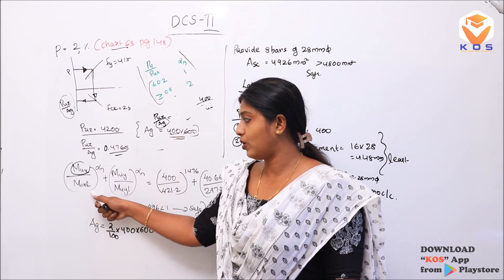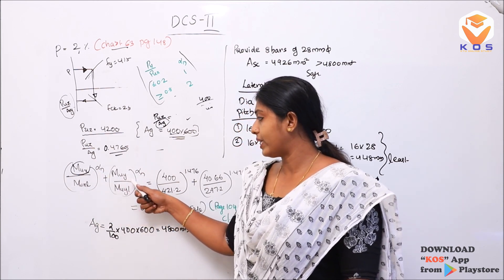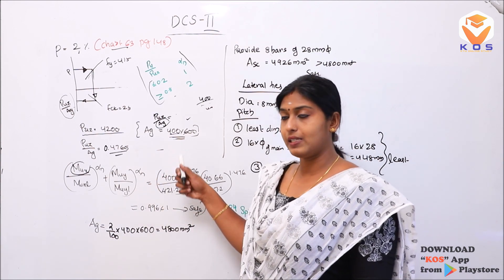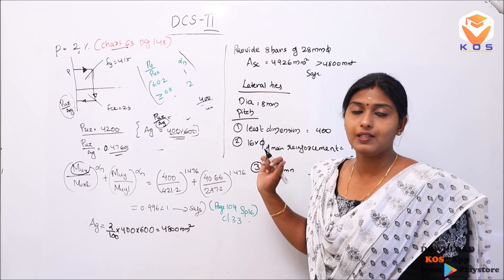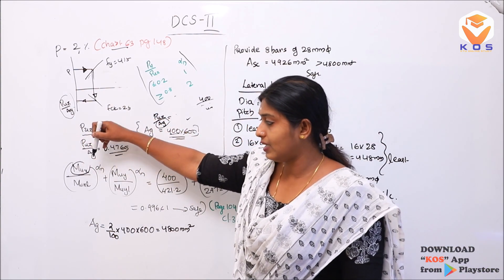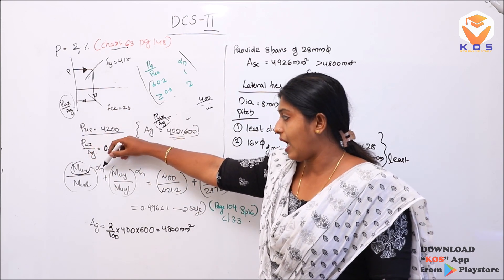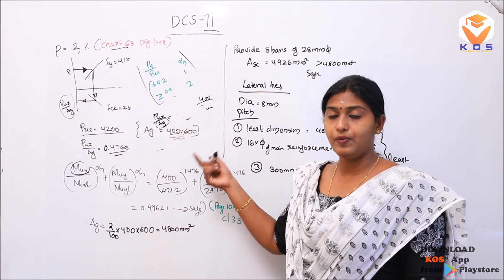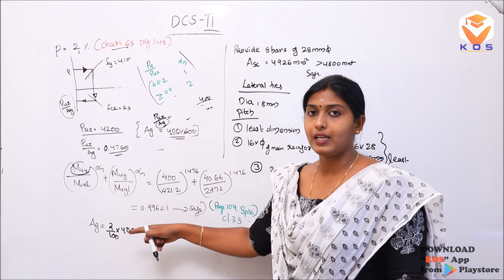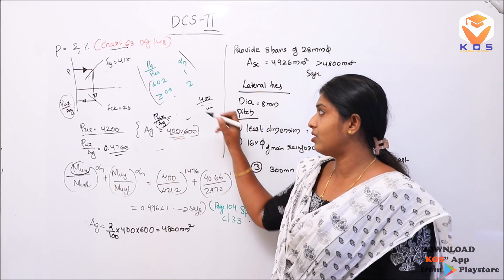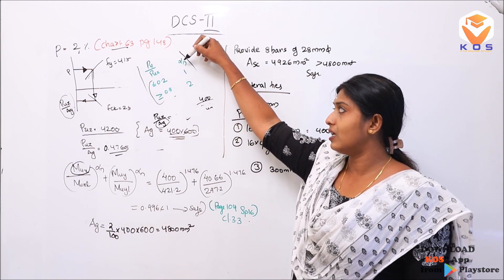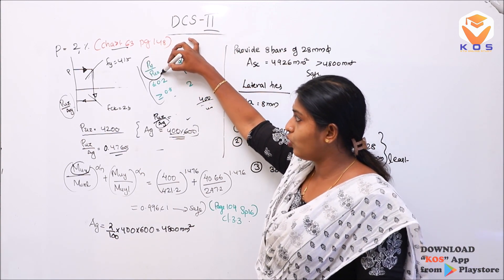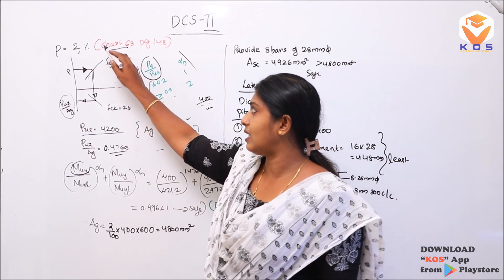Now we apply the biaxial interaction equation from IS-456: (MuX/MuXL)^αn + (MuY/MuYL)^αn ≤ 1. If this value is less than or equal to 1, the design is safe. For this, we need the value of αn. We take the value of αn corresponding to PU/PUZ using chart 63.